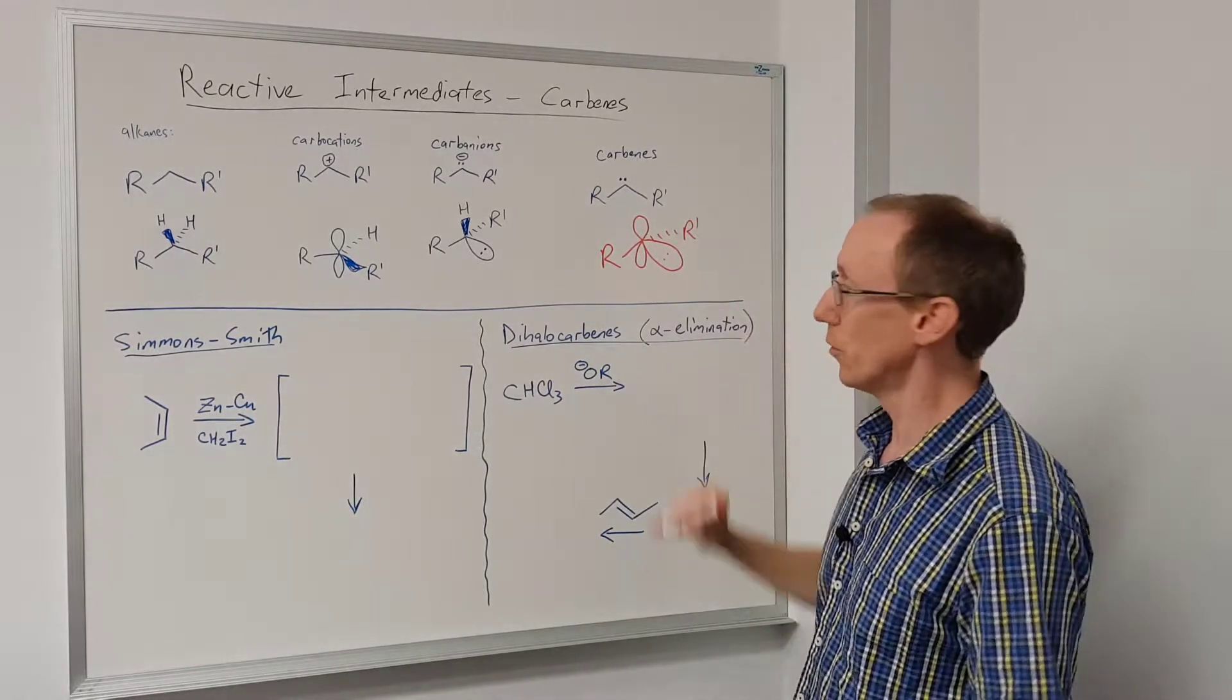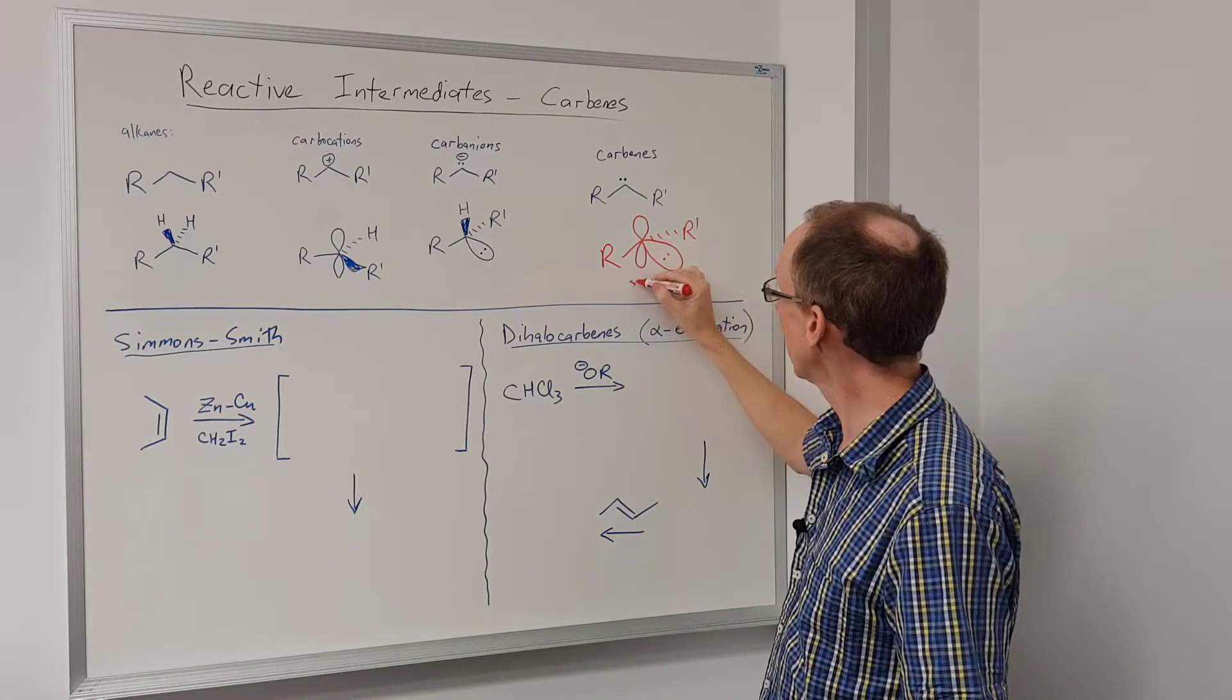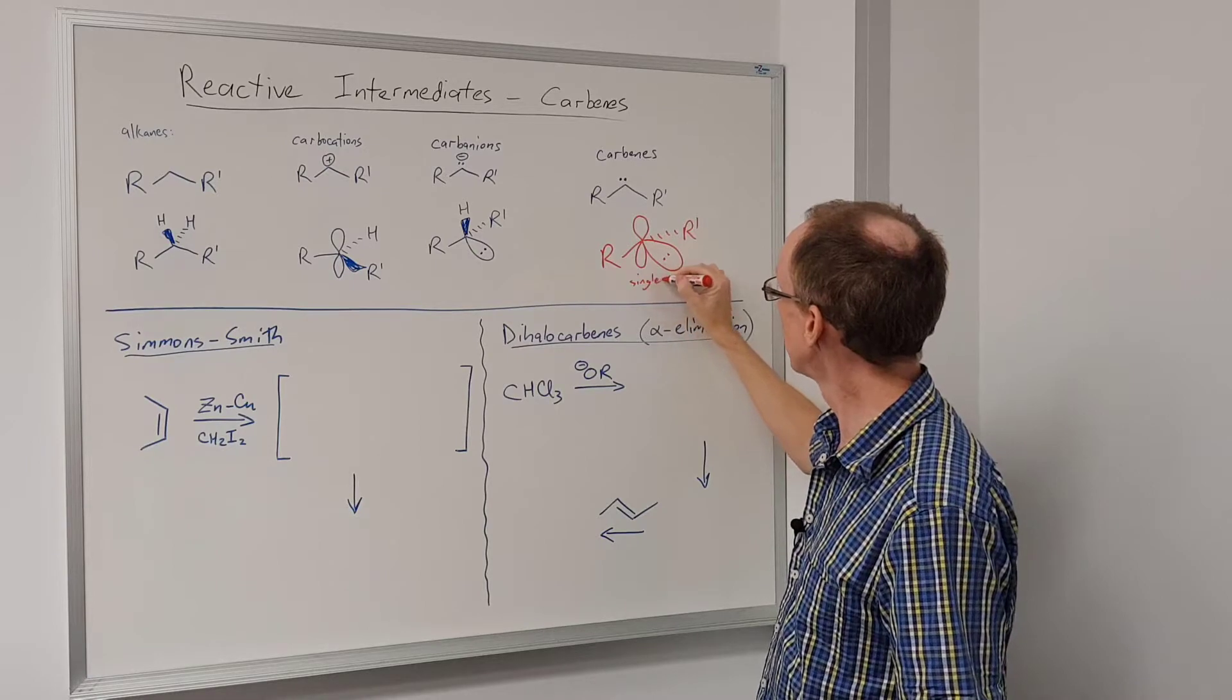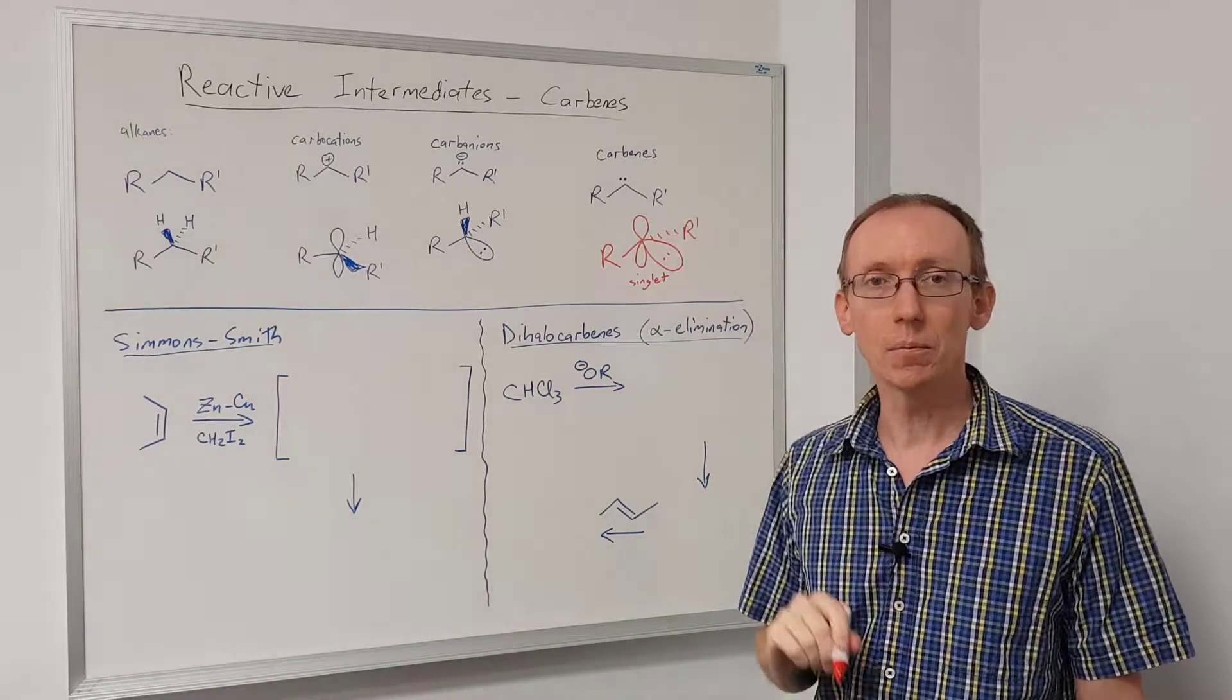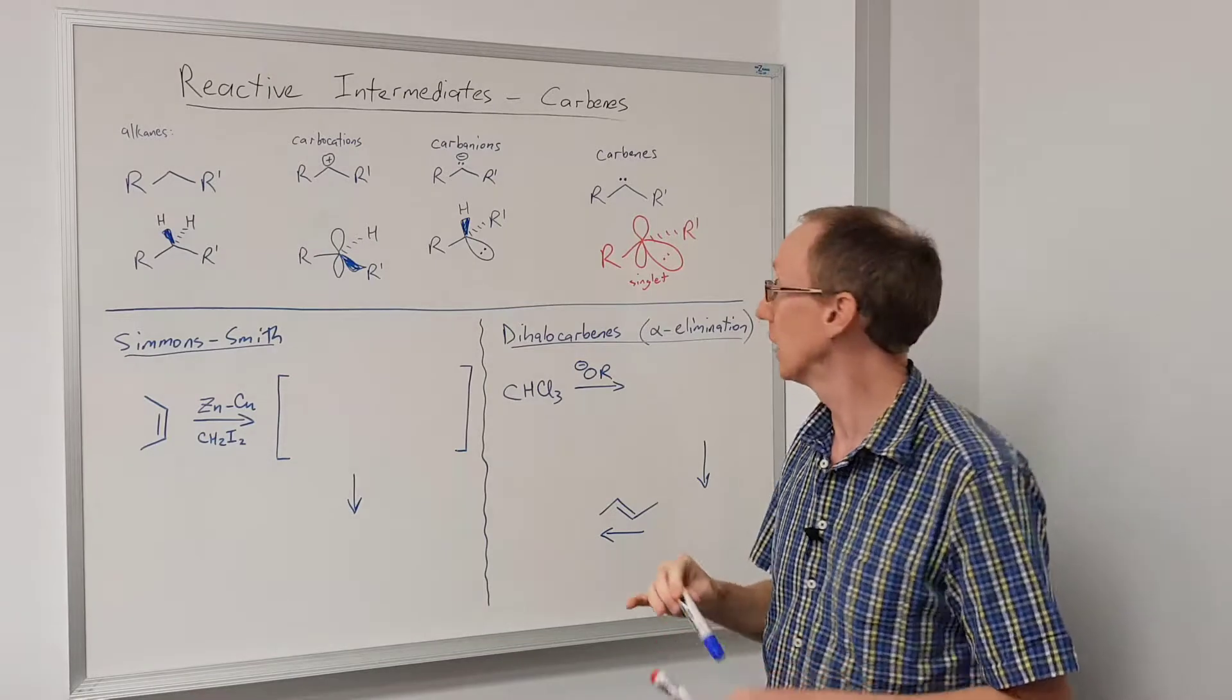Now that's one form they can be in. That's what's called a singlet carbene because both electrons in the lone pair are paired electrons.